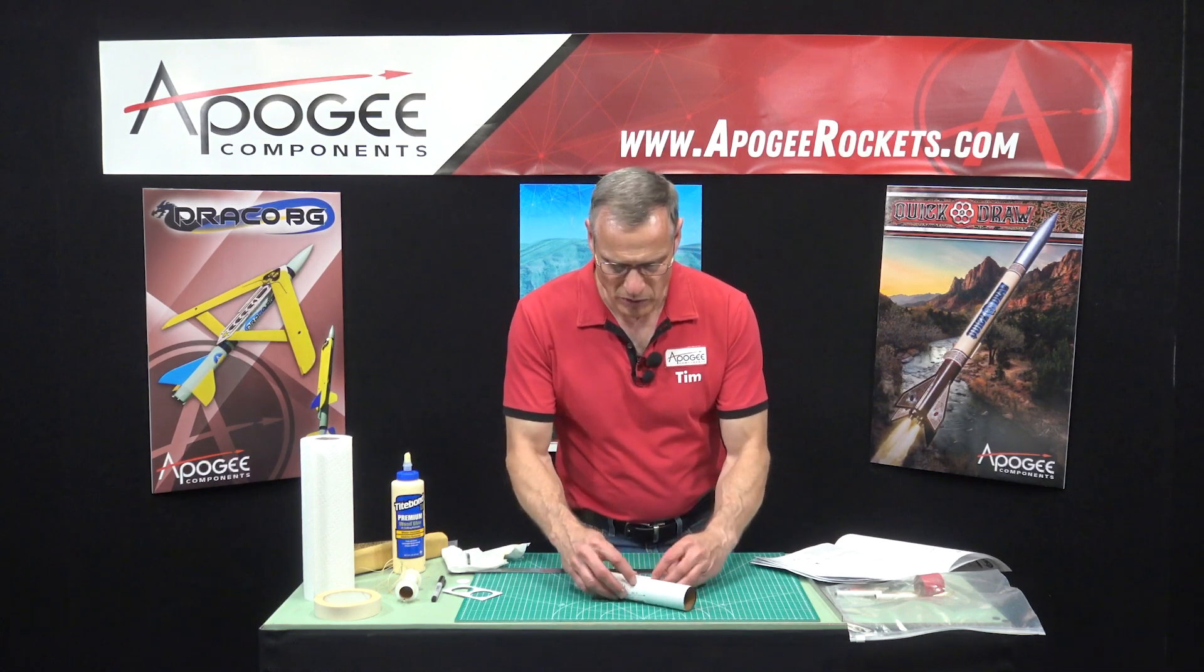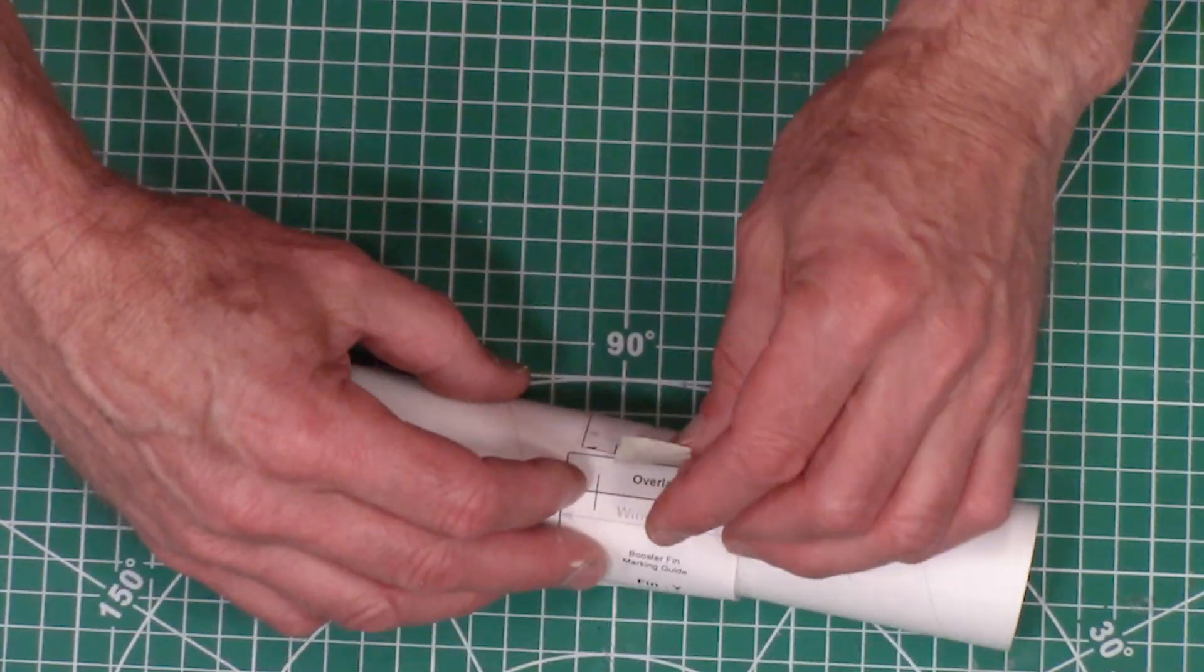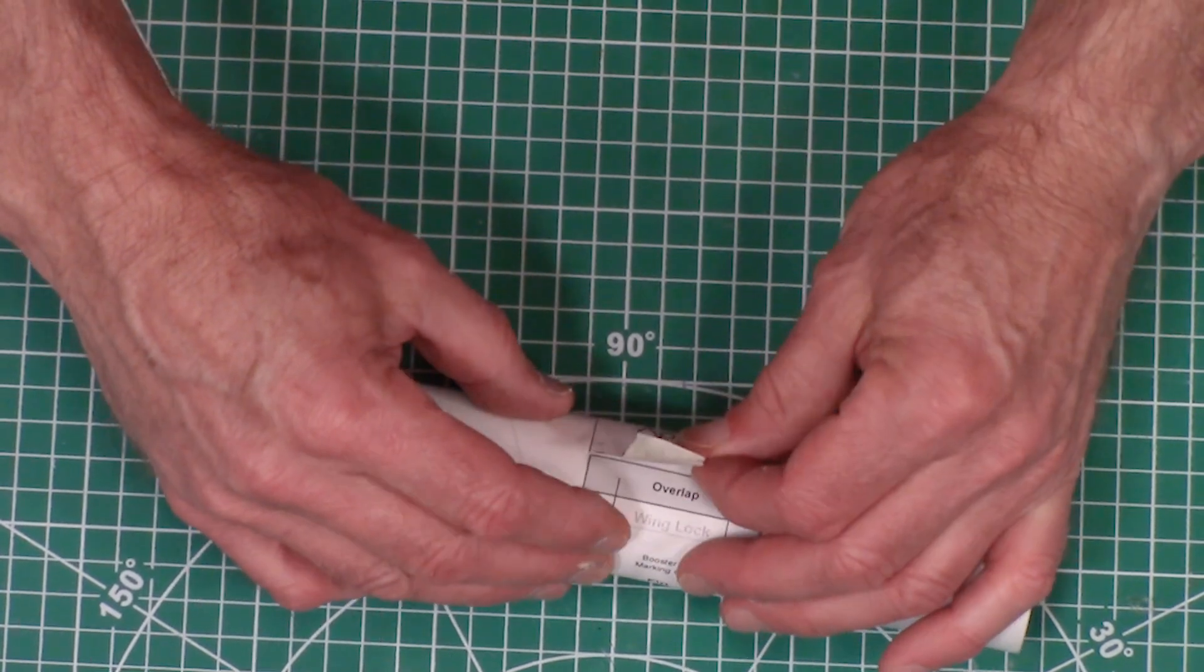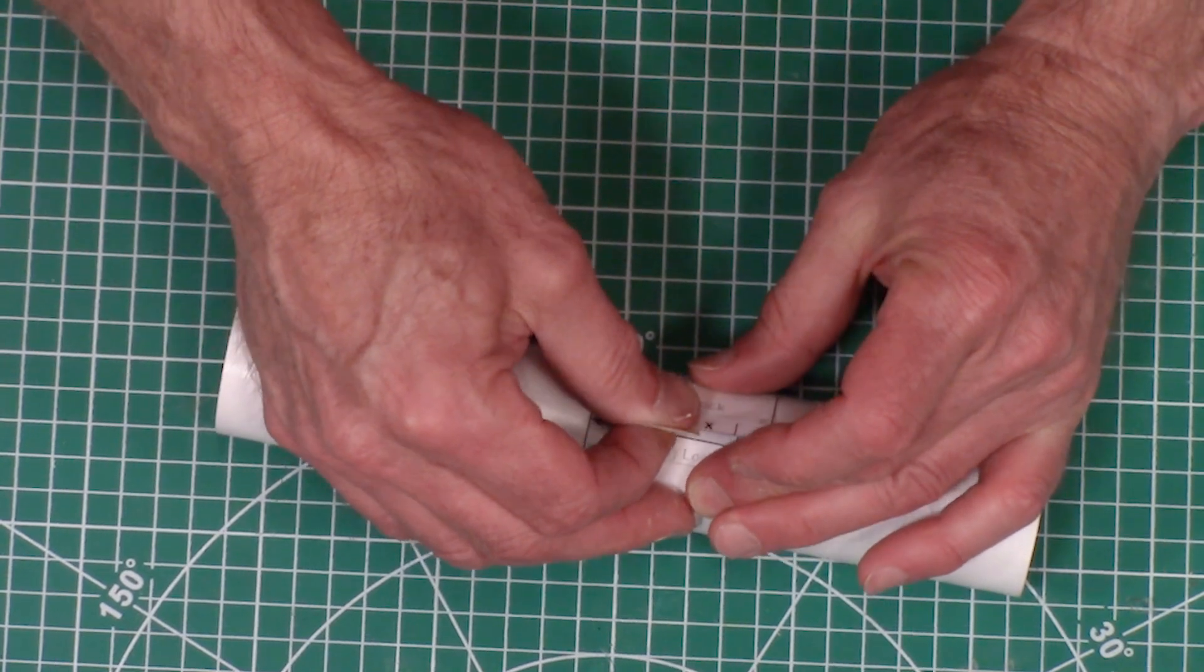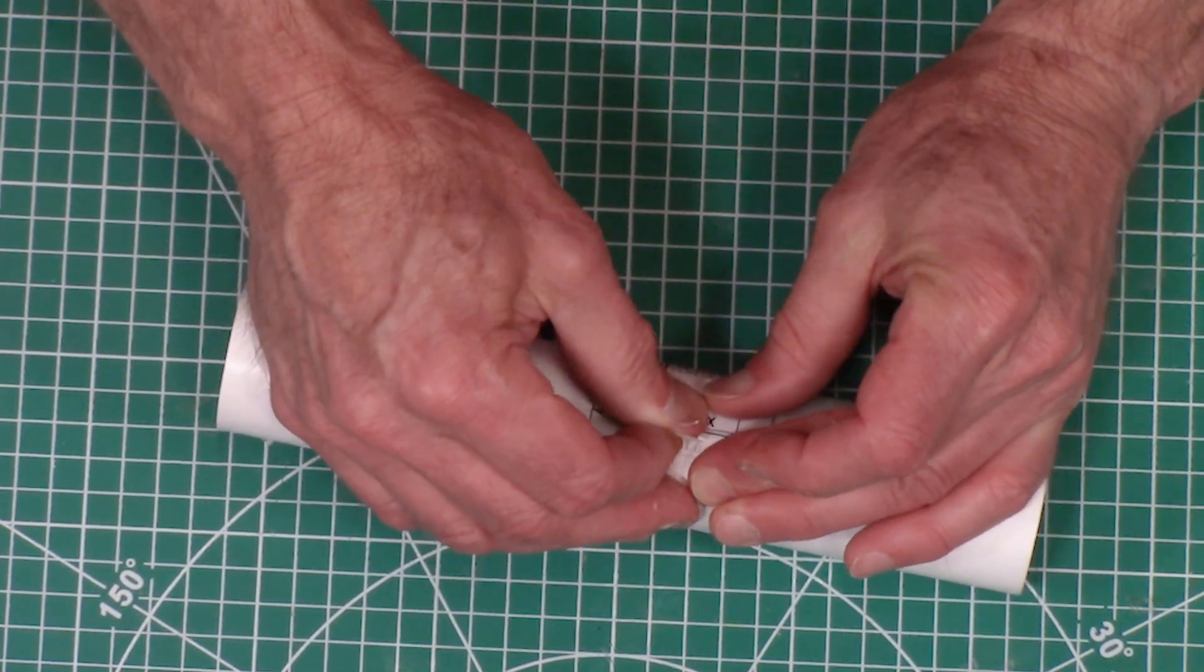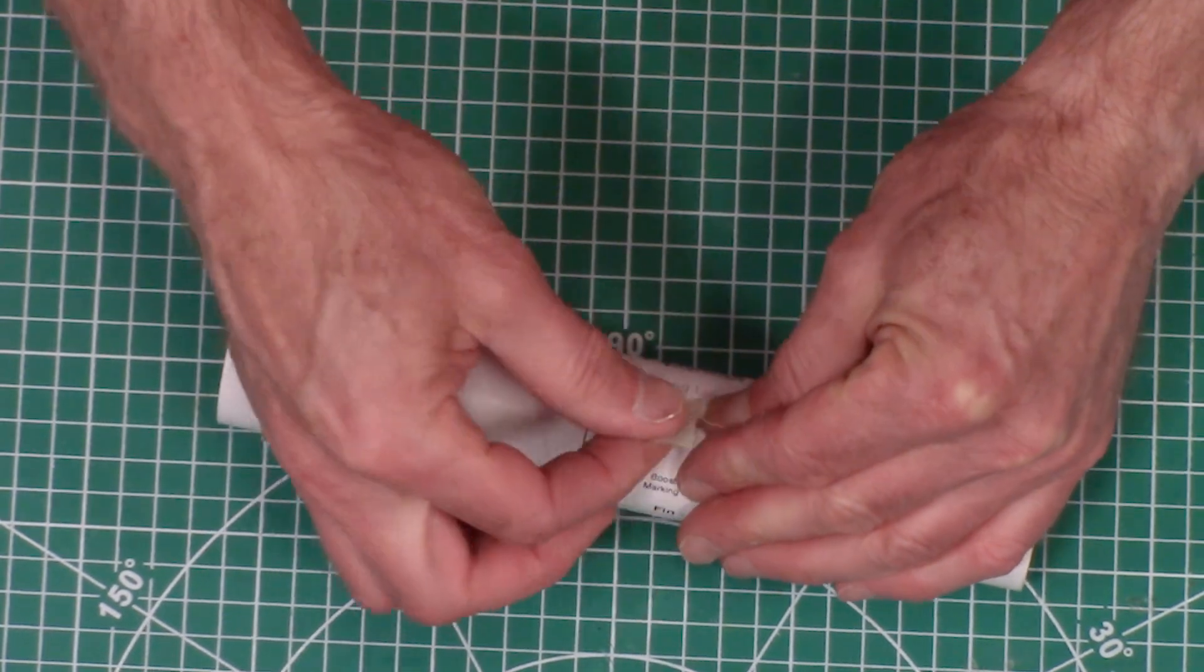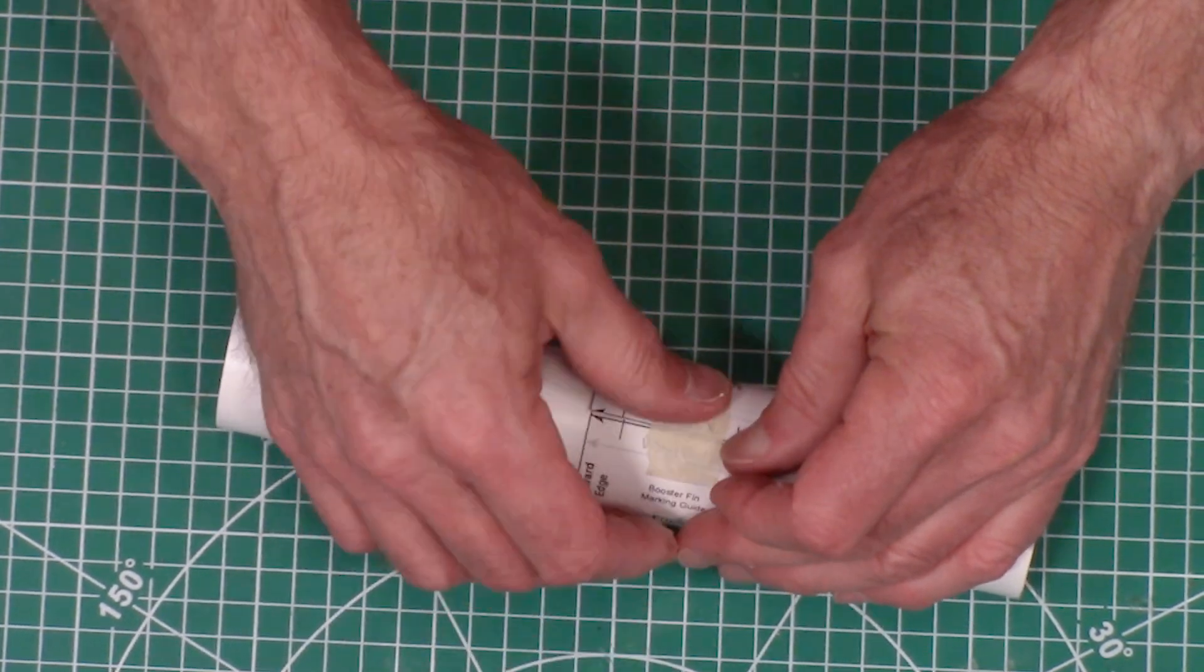When you wrap it around, there's these vertical lines here. We want to align these vertical lines with that and pull it tight.